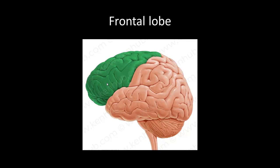First we have the frontal lobe, which includes Broca's area, involved in motor speech. It has other motor cortices and also has a cortex for higher mental functions, including judgment, planning, and social behavior.